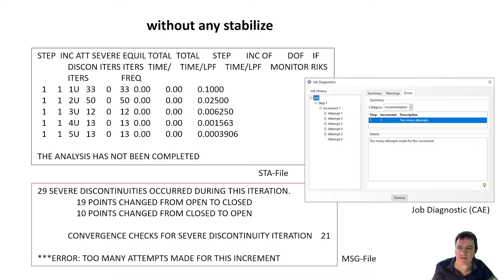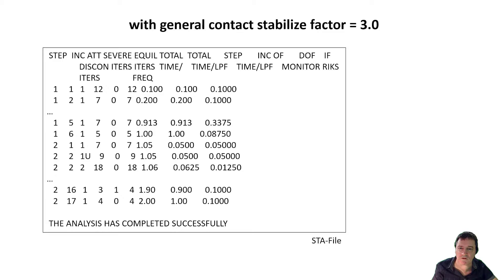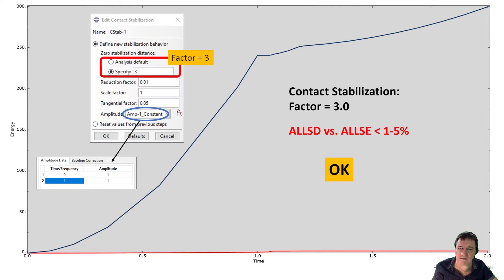The second calculation used global stabilize with a small factor. The calculation for the pretension converges, but the load step does not converge to the end — the increment becomes smaller than the given minimum increment. A contact stabilization may solve this problem. In a third calculation, stabilization for general contact with a factor is used. The calculation converges to the end and completes successfully. The control of the ratio of energies is okay — it is smaller than 5%.